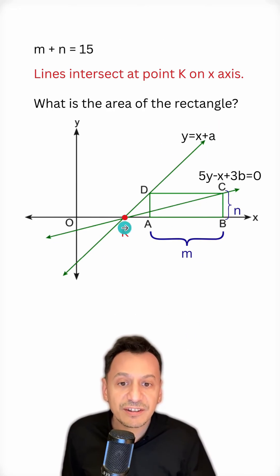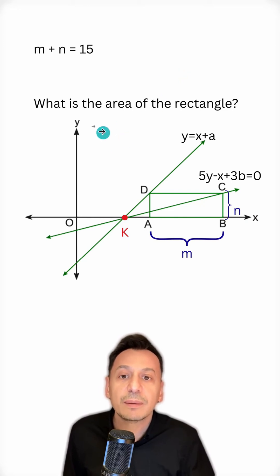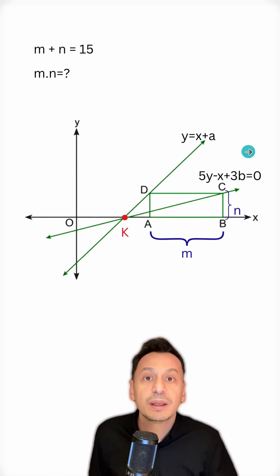We are told that these lines intersect at point k and on the x-axis. Let's denote this with point k and keep it in mind. Let's erase this information here as well. Now we are asked for the area of the rectangle. Since we've called this side m and this side n, we can express the area of the rectangle as m times n.